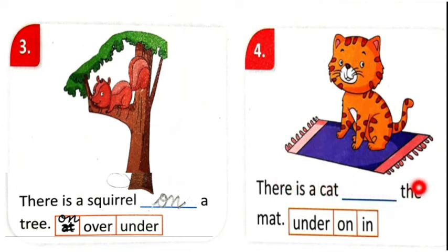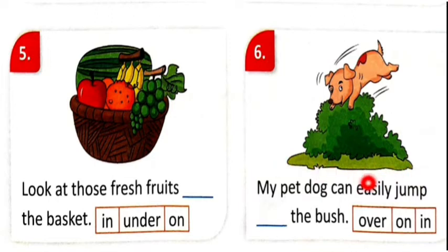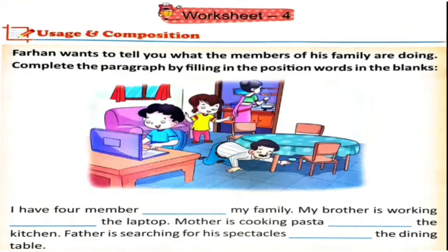Number four: 'There is a cat ___ the mat.' Cat kahaan hai? Under the mat, on the mat, or in the mat? Now fifth: 'Look at those fresh fruits ___ the basket.' In the basket, under the basket, or on the basket? And the last one: 'My pet dog can easily jump ___ the bush.' Yeh bush ke upar se jump kar raha hai, toh aap iske liye kya use karenge? Over, on, ya in? Aap khud decide karenge aur usko fill-up mein likhenge.